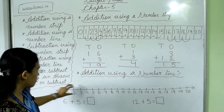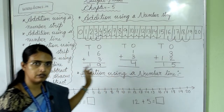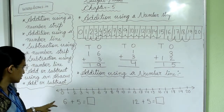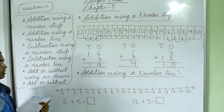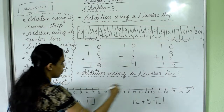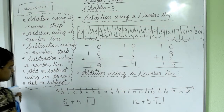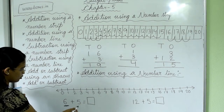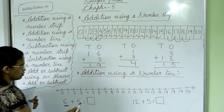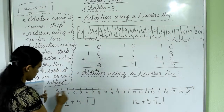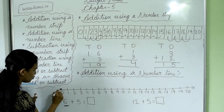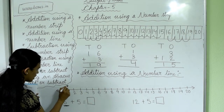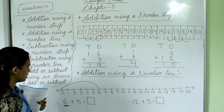This type of sum we have done in our previous chapter. The question is 6 plus 5. In addition, we have to go forward. First, we find our first number, that is 6. Then from 0, we take a long jump up to 6, like this, and give an arrow because we are going forward.